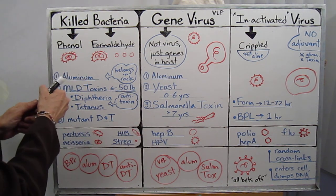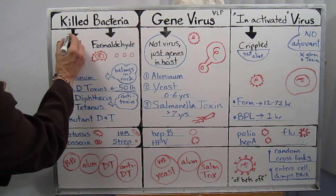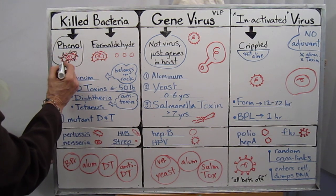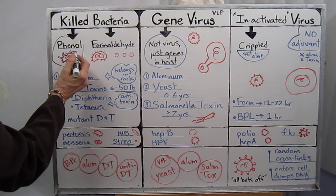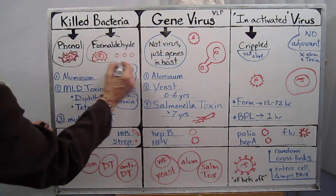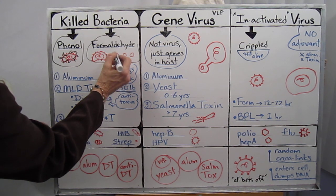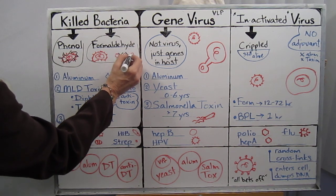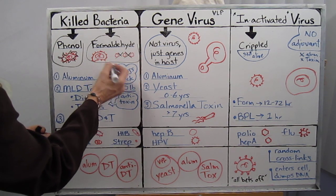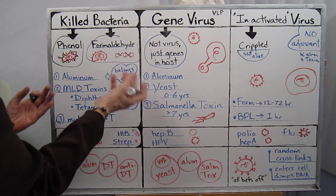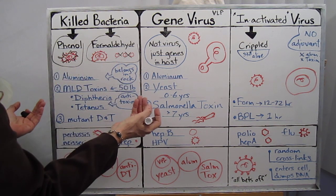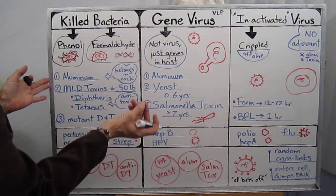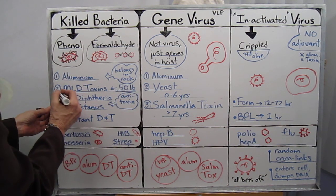Starting with the killed bacteria, they kill them in two different ways. You can use phenol, which explodes the cell — this represents bacteria with its little flagellas around it, and it's exploding it. Formaldehyde works differently: it binds the proteins on the membrane of the bacteria together by cross-linking them, and that's how you preserve dead tissues and dead proteins from breaking down. Because this killed bacteria is no longer a threat to the immune system, they put adjuvants in it.